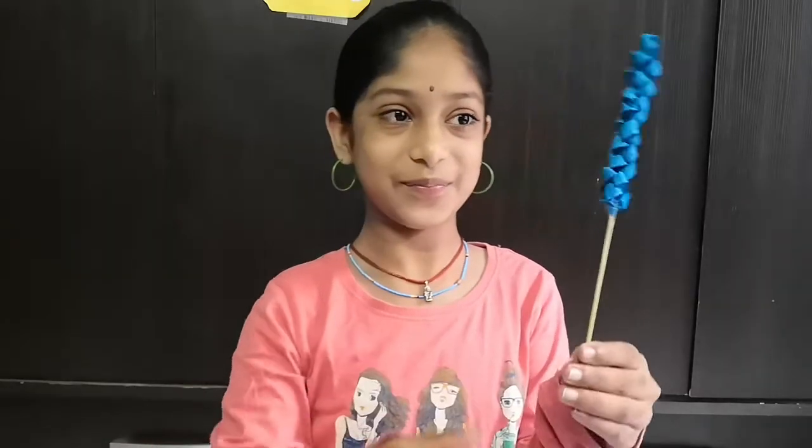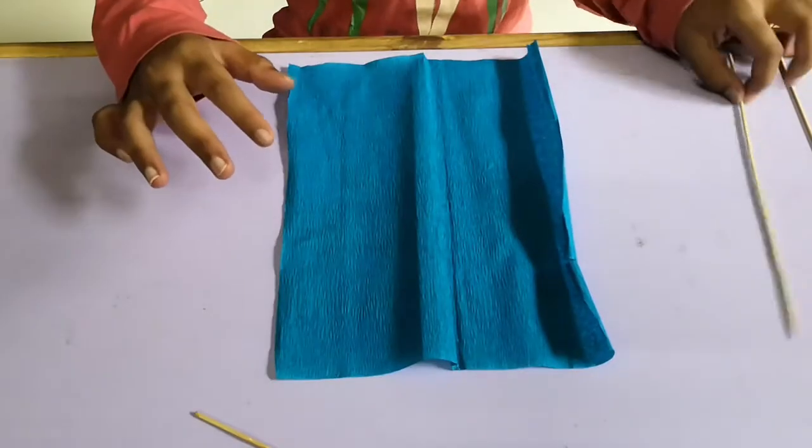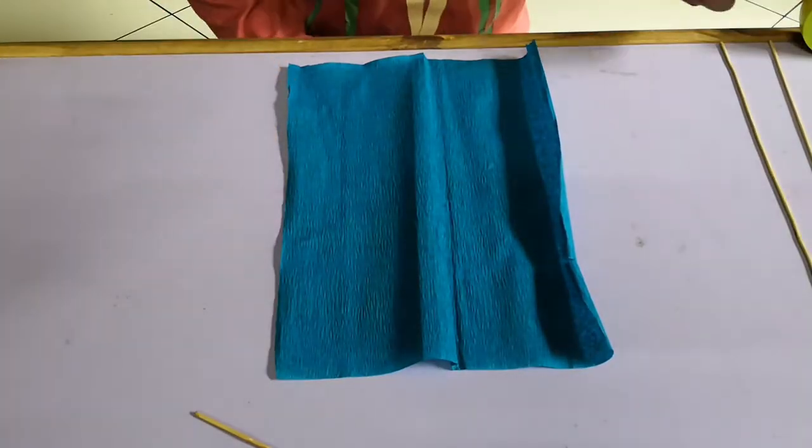It looks like this. To make a paper flower, you will be needing a piece of colored paper, skewer sticks, tape, and scissors.